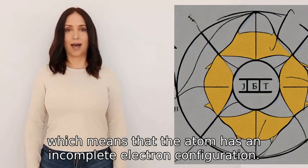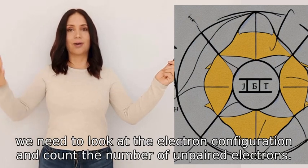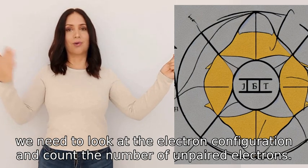To determine the hybridization, we need to look at the electron configuration and count the number of unpaired electrons.